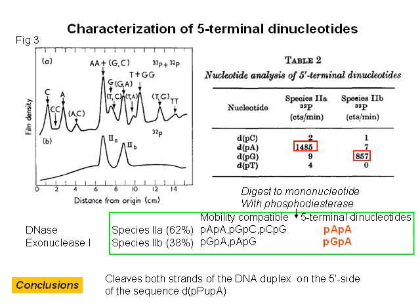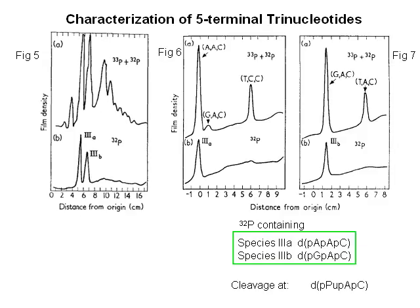The conclusion is endonuclease R cleaves at purine A. Five-prime terminal trinucleotides were analyzed: terminally labeled DNA was digested sequentially with DNase and phosphodiesterase, and the trinucleotide fraction was analyzed by electrophoresis. Figure 5 shows there are two P32-containing trinucleotide species, 3A and 3B. After separation of 3A and 3B from contaminating trinucleotides by electrophoresis, as shown by Figures 6 and 7, species 3A was identified as AAC and species 3B as GA. The conclusion is endonuclease R cleaves at purine AC.